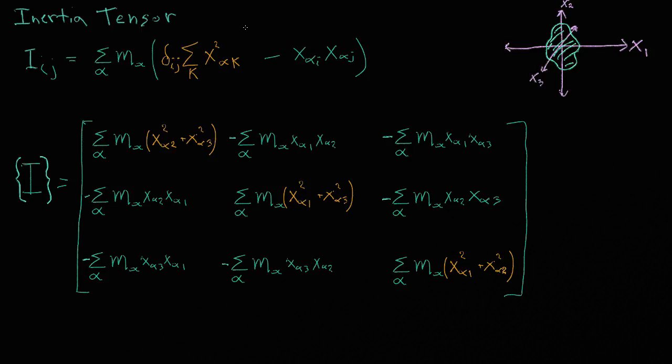Alright, so we have this tensor here defined. This is it all written out, and this is the shorthand version written with indices. So I've written in orange the parts that use the Kronecker delta, and then these terms here have been affected by the Kronecker delta. So I guess we can describe what each of these pieces mean.